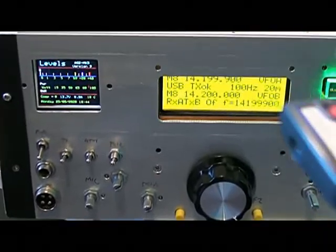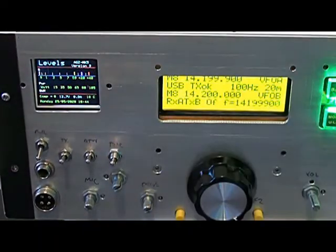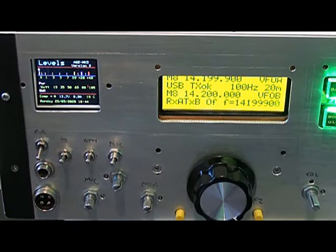so that an S9 signal reads S9 on the meter. Now an S9 signal is specified as minus 73 dBm, so we need to get a signal generator that's producing minus 73 dBm into the front end of the receiver.